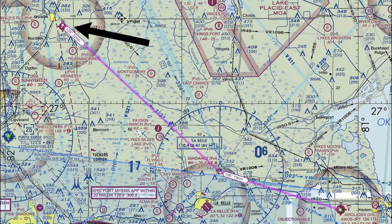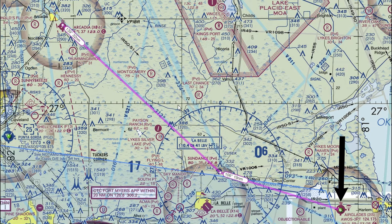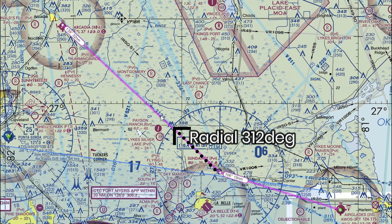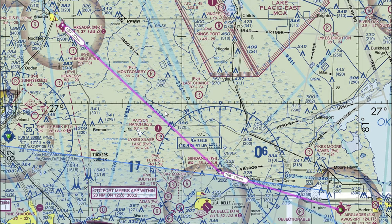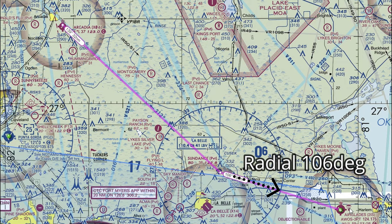Today we are going to be departing Arcadia Municipal. We're going to be tracking the Labelle VOR inbound to Airglades Airport. If we look on our chart, the radial we're going to be tracking inbound to the VOR is 312. The actual course heading that we're going to be on is 139. The outbound radial to our airport is going to be 106, and we're going to be coming inbound to runway 13.